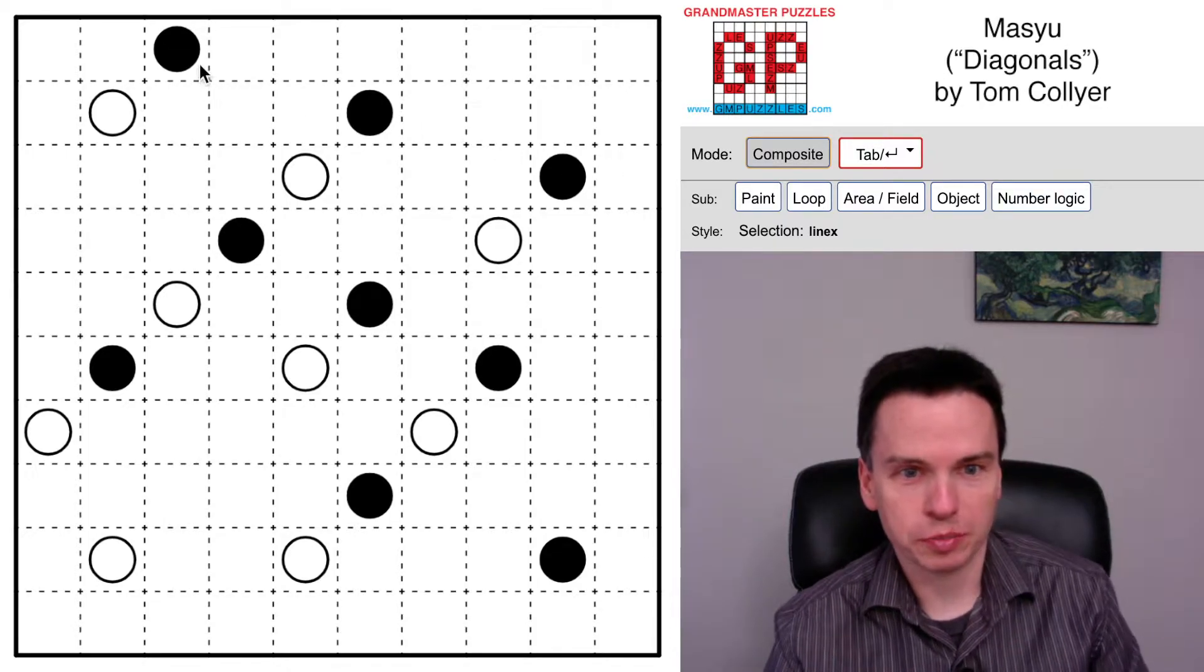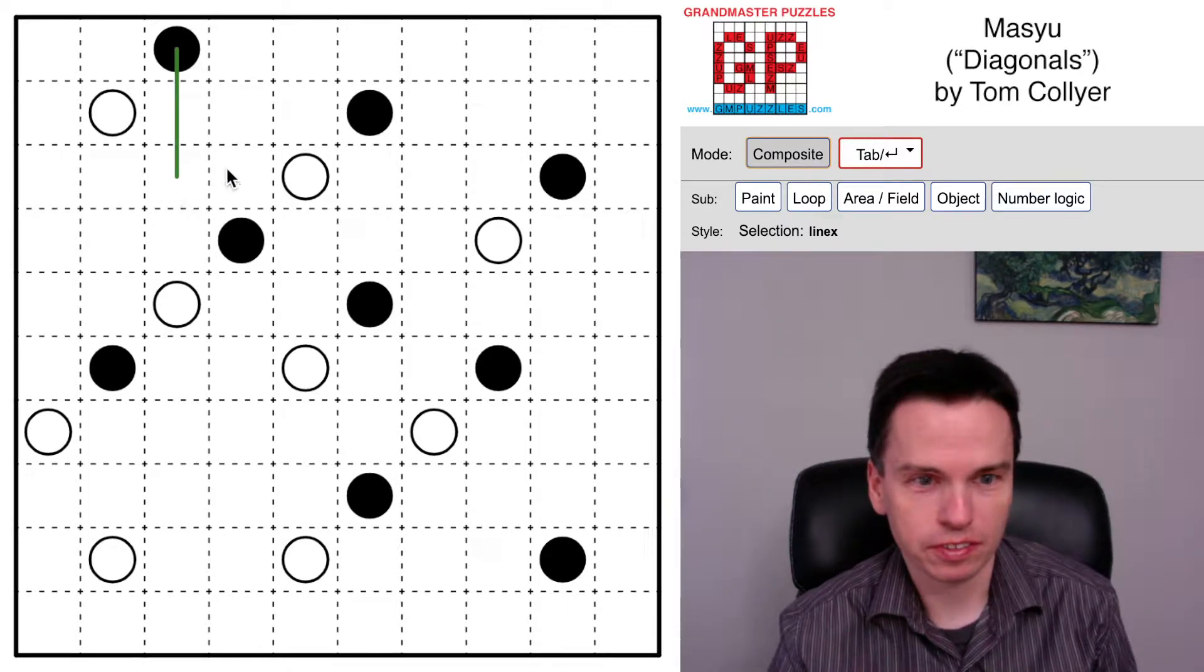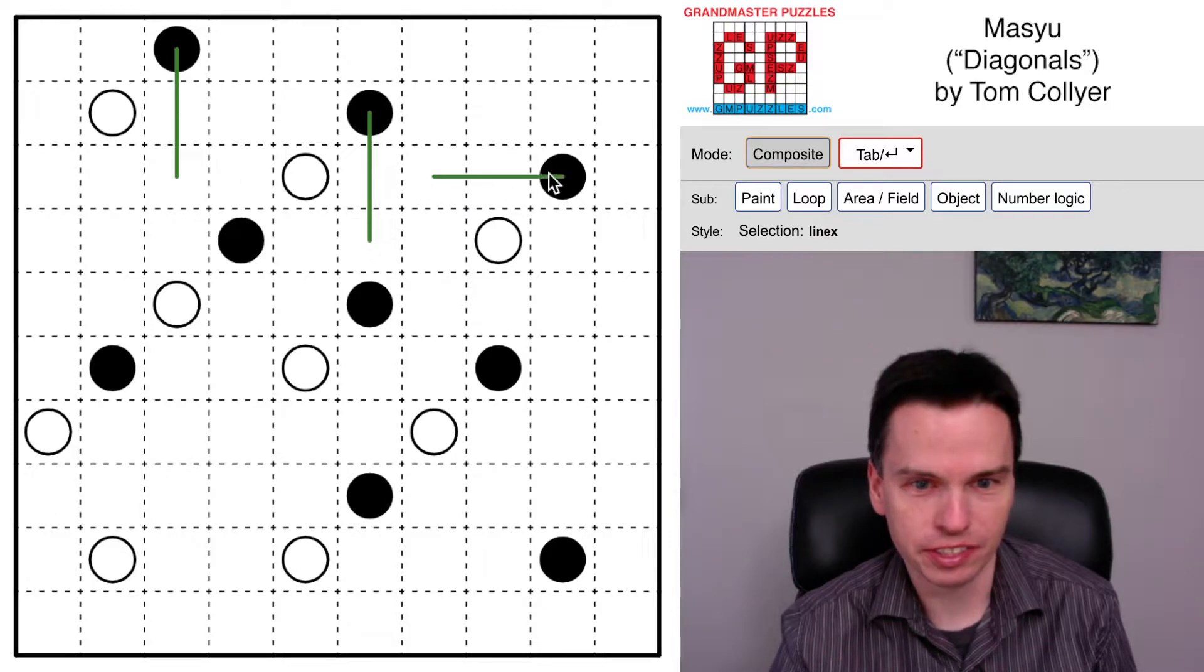I'm here to talk through this easy Masyu puzzle by Tom Collier called Diagonals. I'm going to start with these black cells that are near edges that have line segments you can draw in.